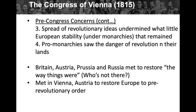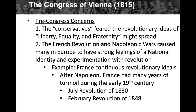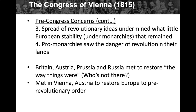The spread of revolutionary ideas undermined what little European stability remained — that stability being under the monarchies still in Europe. The spread of these ideas undermined whatever power those monarchies still had. And pro-monarchies saw the danger of revolution in their own lands. So the pre-Congress concerns were: fear of revolutionary ideas, strong feelings of national identity, the spread of ideas undermining stability, and pro-monarchies seeing the danger of revolution.